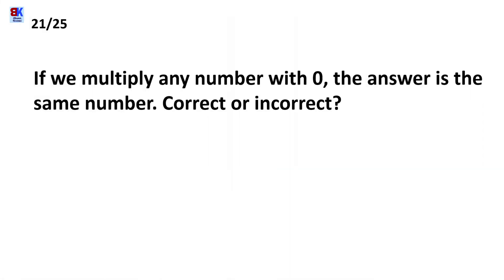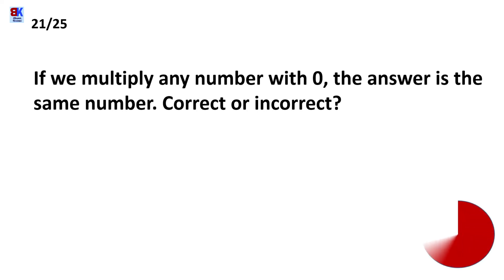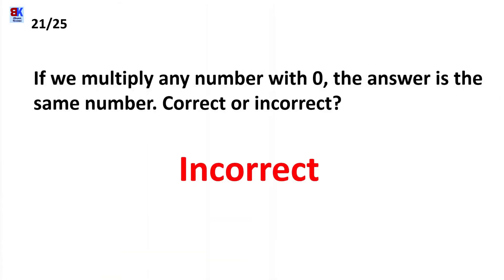Twenty-first question: if we multiply any number with 0, the answer is the same number — correct or incorrect? It's incorrect. If we multiply any number with 0, the answer would be 0, not the same number.